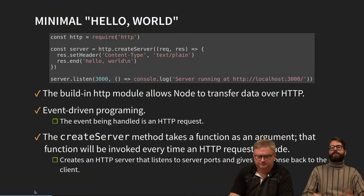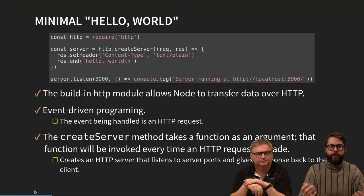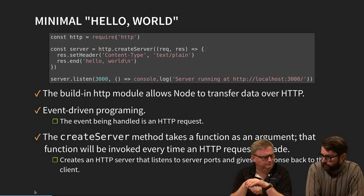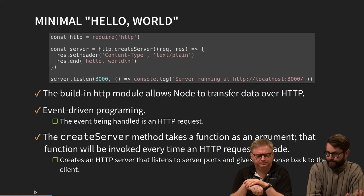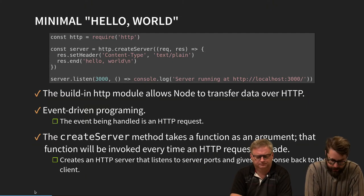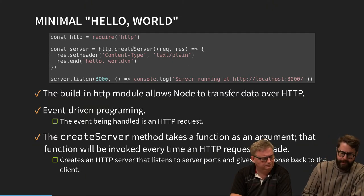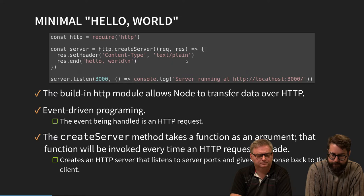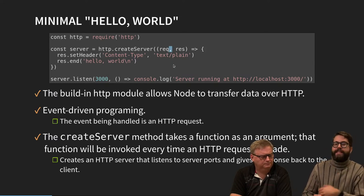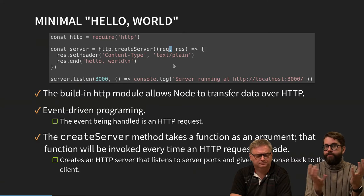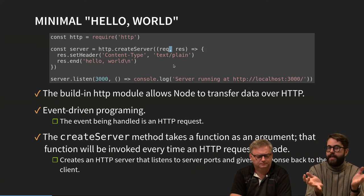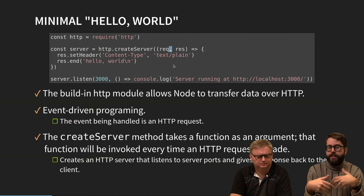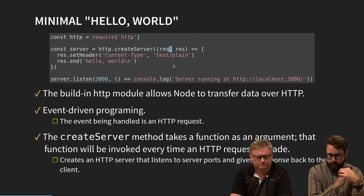Let's create a simple web server in Node. We're using a built-in module called HTTP — no need to download anything, it comes when we install Node. In the boilerplate code, we are creating a server which will have a request and a response object. From the request we get information about the user's browser, sent-in data, and which URL is being fetched. The response is what we send back to the client.